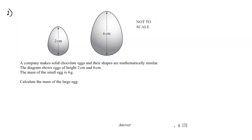In question 2, we have been given two shapes. A company makes solid chocolate eggs and the shapes are mathematically similar. The diagram shows eggs of height 2 centimeters and 6 centimeters. The mass of the small egg is 4 grams. Calculate the mass of the large egg.